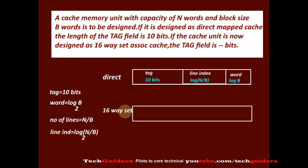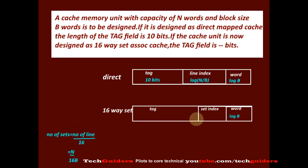Now if we are designing it as a 16-way set associative cache, the number of bits required for the word field will remain the same, that is log b to the base 2. To find out the number of bits required for the set index, we find the number of sets. The number of sets equals number of cache lines divided by size of the set. Size of the set is 16, and number of cache lines is n/b, thus n/(16b). So the number of bits required for the set index is log(n/16b) to the base 2.